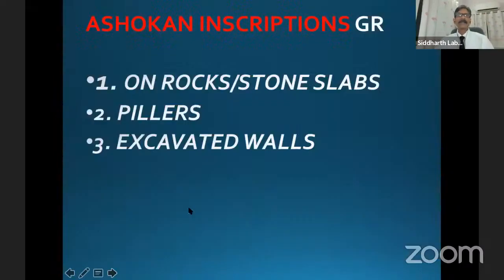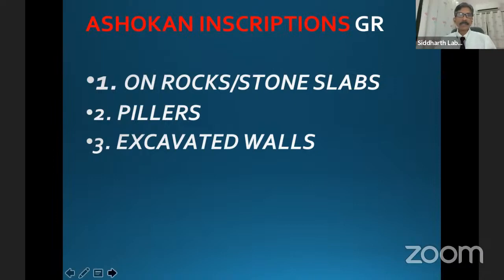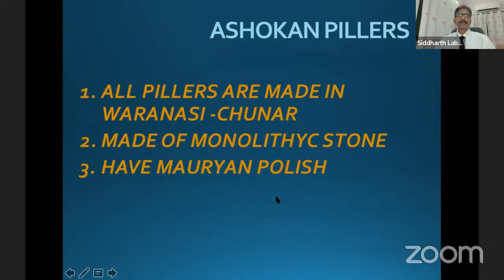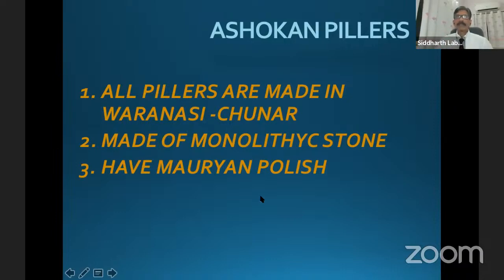Let us go through the Ashokan inscriptions quickly. How grateful these British people were — they protected our monuments and all Buddhist sites. These rock-cut slabs, pillars, and excavated walls bear the Ashokan inscriptions. The pillars are made of the Varanasi stone called Chunar — the village where these stones were taken — and then polished by the Mauryan polish. All the pillars are monolithic stone — a single piece. That is the beauty of the Ashokan pillars. We will not discuss much detail about Ashokan pillars as it is an altogether different subject.